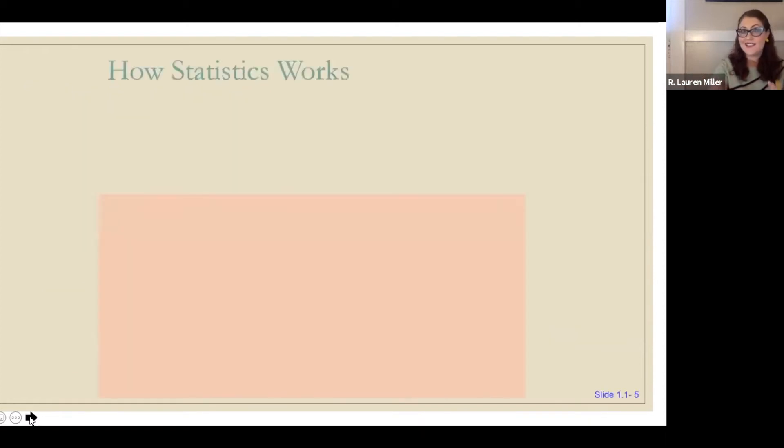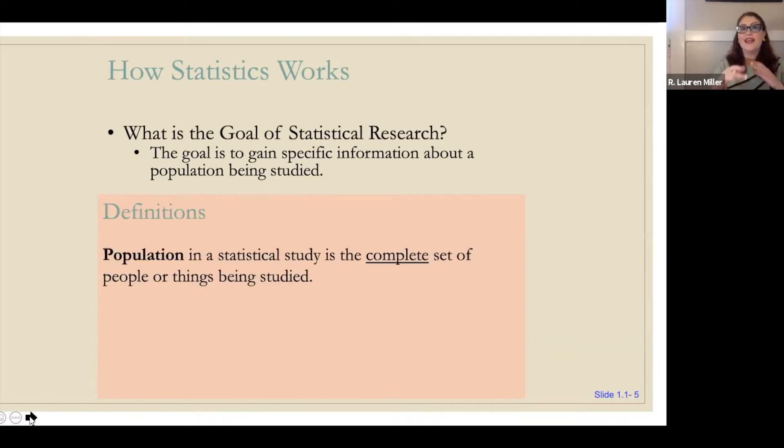So how does statistics work? The goal of statistical research is to gain specific information about a population being studied. Now, it's important to note that when I say population, it doesn't necessarily mean people. I could be studying a population of plants or a group of local businesses like a McDonald's franchise. The population in a statistical study is the complete set of people or things being studied.